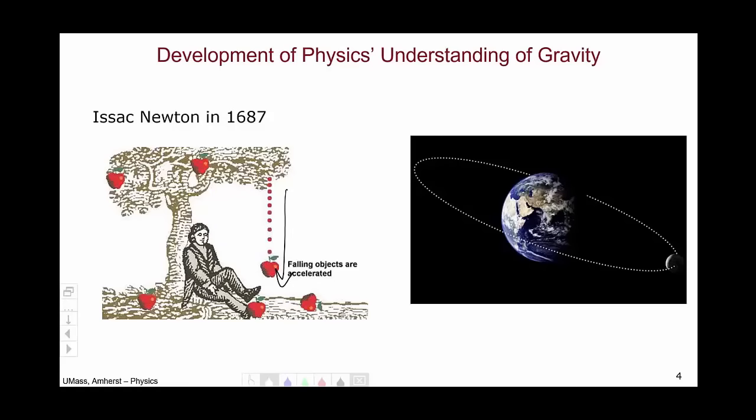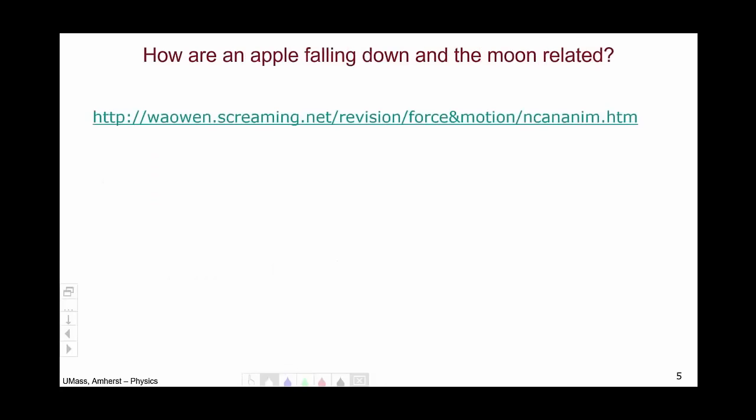But you might say to yourself, the apple falls straight down while everyone knows that the moon goes around and around. These seem like fundamentally different motions. So in line with our fundamental physics goal of trying to understand the fundamental ideas, we're going to look at it in the exact same way that Isaac Newton did back in 1687, using this particular little applet that you can find on the web.